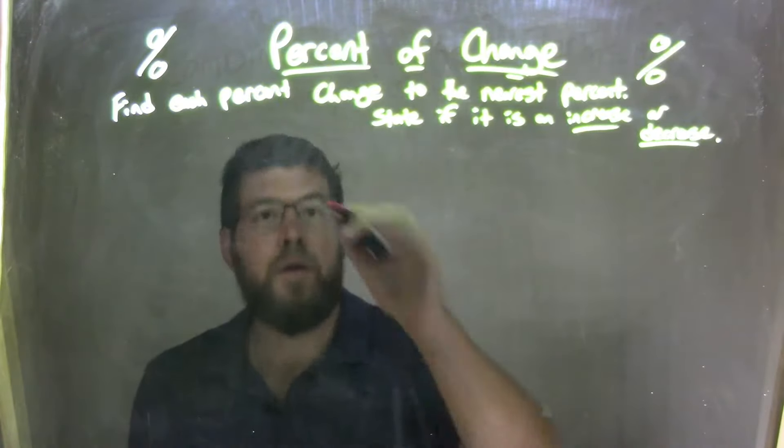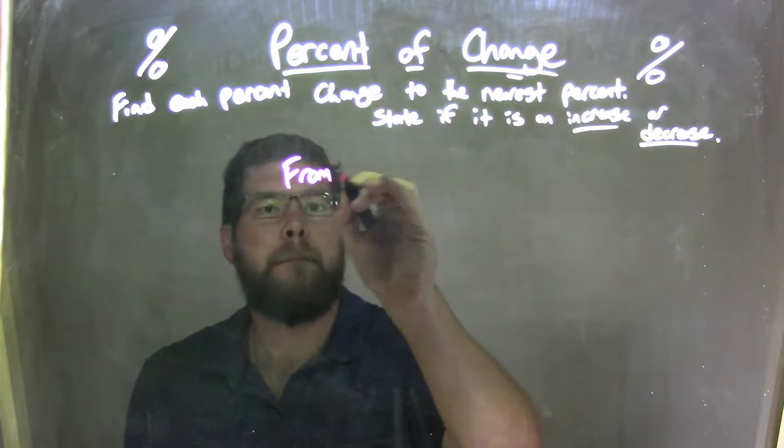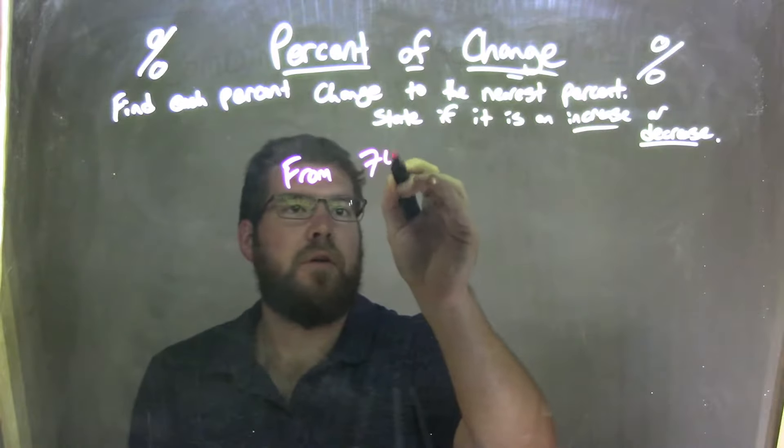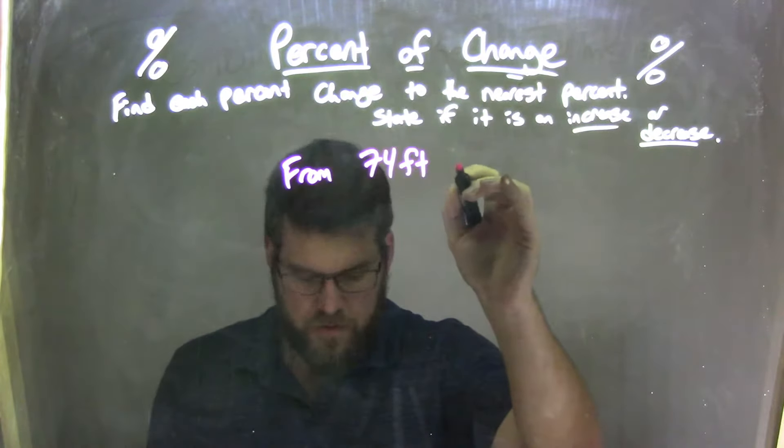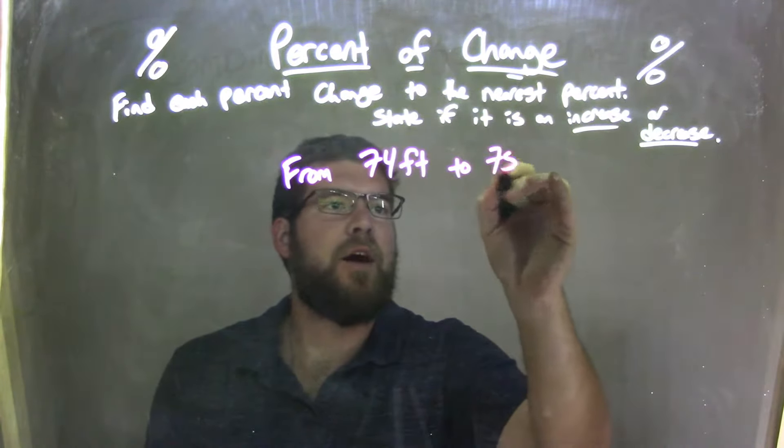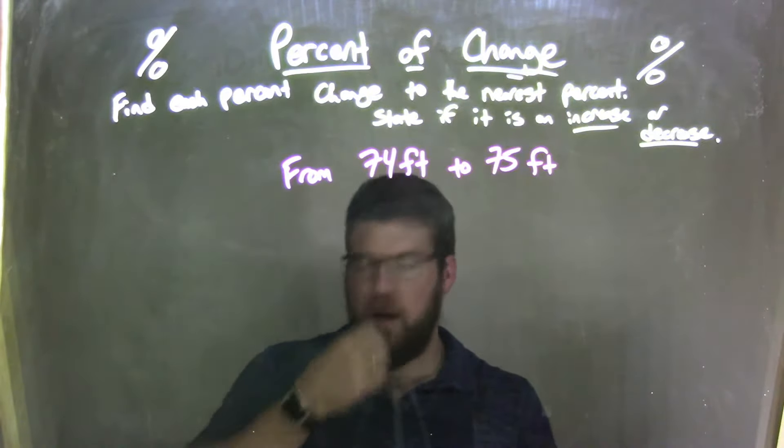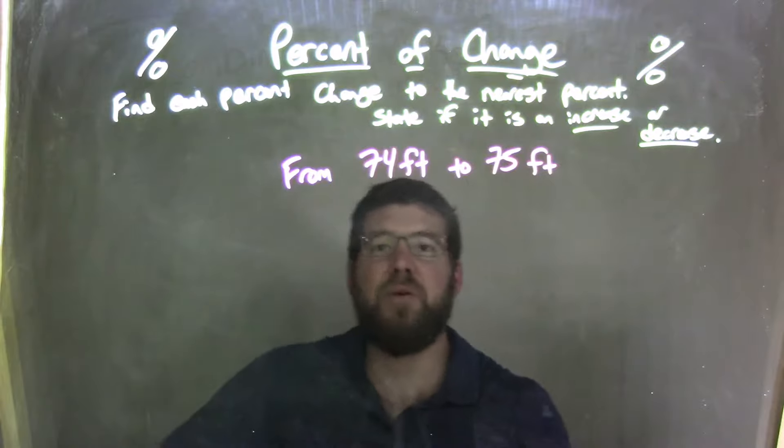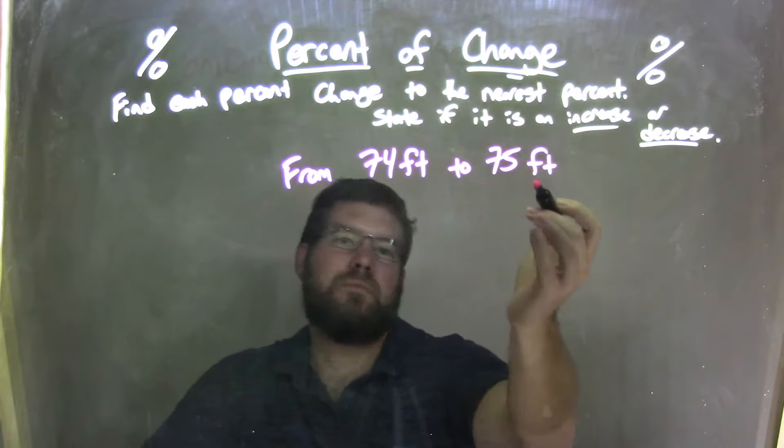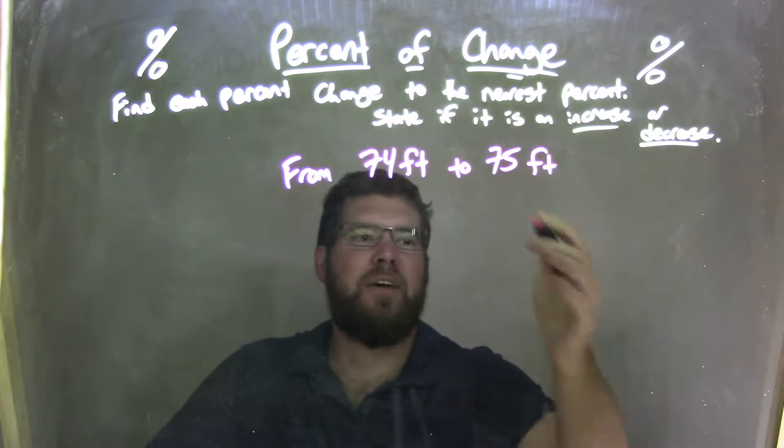If I was given this problem from 74 feet to 75 feet, okay? Well first, I know, is that an increase or decrease? That's an increase, right? Increase of one foot, right, 74 to 75, so that's an increase.